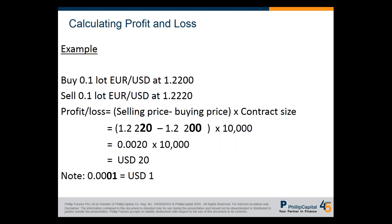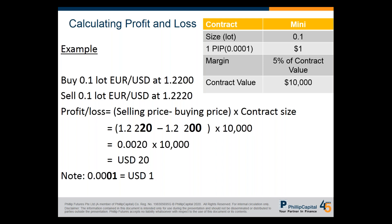For calculating profit and loss — selling price minus buying price gives you your P&L. For a 0.1 lot contract, one pip equals one dollar. So if I buy 0.1 lot of Euro/USD at 1.2200 and sell at 1.2220, the difference is 20 pips, which equals $20. You don't really need to do the calculation manually because the platform automatically calculates and reflects P&L on screen.